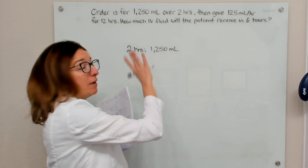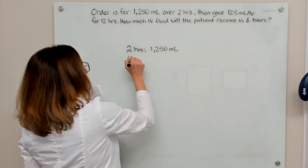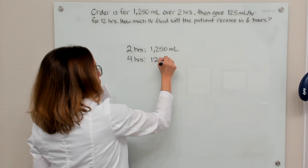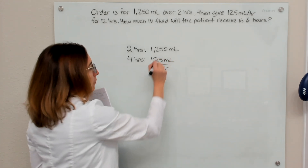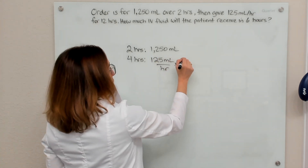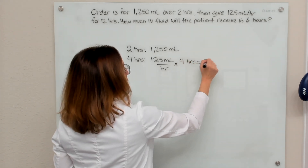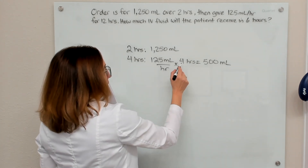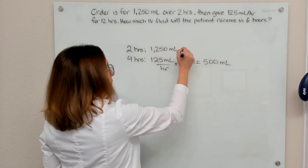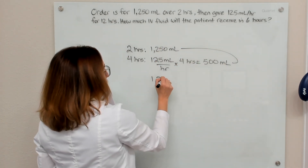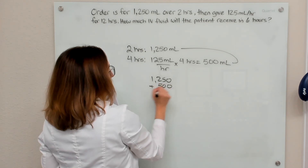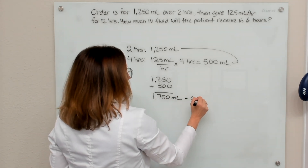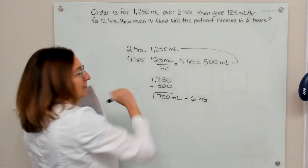No math required to figure that one out. Then for the next four hours, they're going to be getting their IV fluids at a rate of 125 milliliters per hour. So if we take this rate and multiply it times four hours, we end up with 500 milliliters. So if we add these two things together — 1,250 plus 500 — we end up with 1,750 milliliters for six hours.